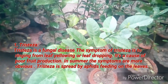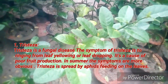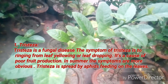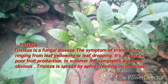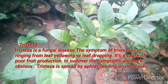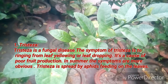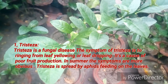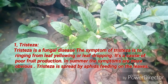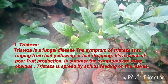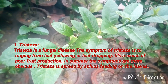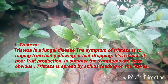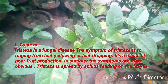Tristeza is a fungal disease. The symptoms of Tristeza include leaf yellowing and leaf dropping, and it causes poor fruit production. In summer the symptoms are more obvious. Tristeza is spread by aphids feeding on the leaves.